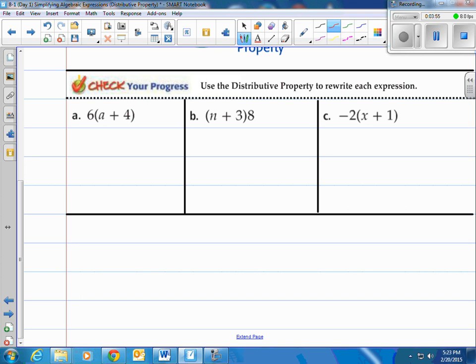Alright, first one, A. Use the distributive property to rewrite each expression. Just like we were doing in our examples, we're going to distribute the 6 to the a and the 4 through multiplication. So I'm going to say 6 times a and then 6 times 4. When I do that, I end up with 6a and I end up with 24. There you go. That's our answer.